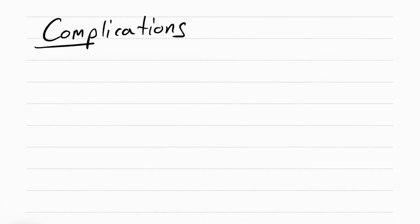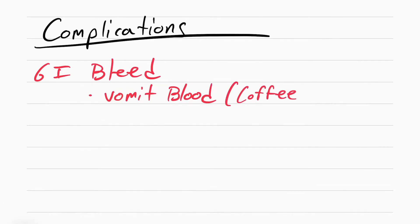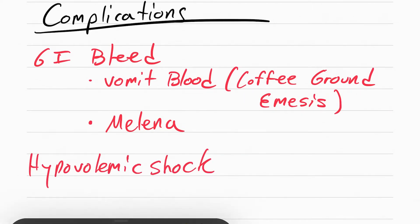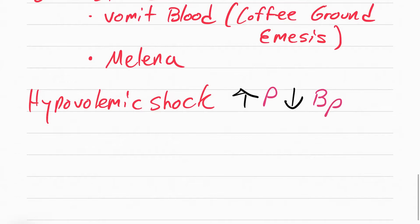There's a couple complications that can happen with peptic ulcer disease. The first one is GI bleed. The ulcer can erode so much that it starts to bleed. What you're going to see the patient do is vomit blood. Sometimes this is described as coffee ground emesis. The GI bleed can also cause melena, or dark poop. You want to make sure you do a fecal occult blood test. If the patient keeps bleeding inside and losing fluid, they can even go into hypovolemia, which just means the patient's low on fluid. The first sign of hypovolemic shock is going to be increase in pulse. Later on, you'll see a decrease in blood pressure.